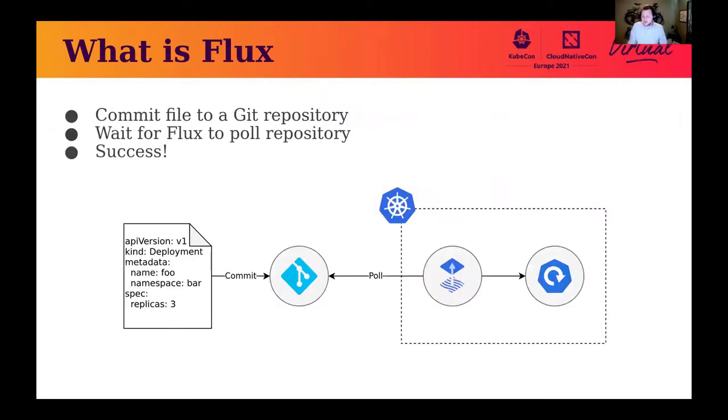So this is a quick overview of how it might look to work with Flux. In one end, you have your deployment manifest that you commit to a Git repository. On the other end, you have Flux pulling the Git repository, constantly looking for changes. If a change is detected, it will apply it to the cluster. You have your deployment manifest on one end, and then your deployment on the other.